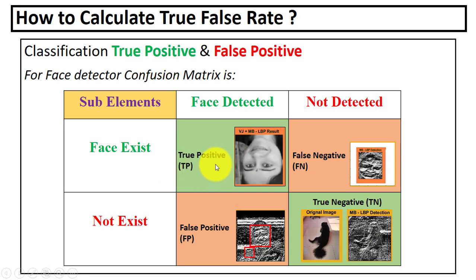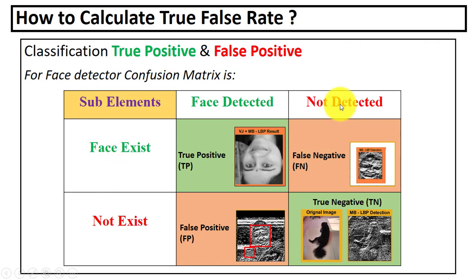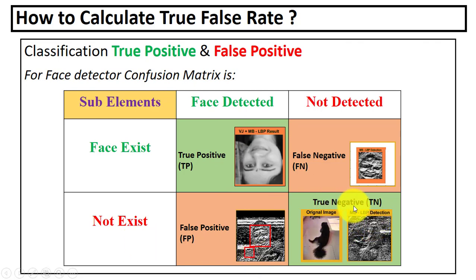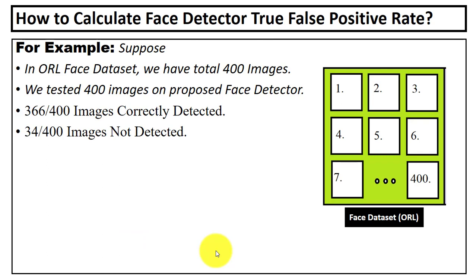Now you can see: the first case is true positive — face exists and face is detected. The second case is false negative — face exists but is not detected by the face detector. The third case — face does not exist but something else is detected as face — is false positive. The fourth case — no face, no detection — is true negative.